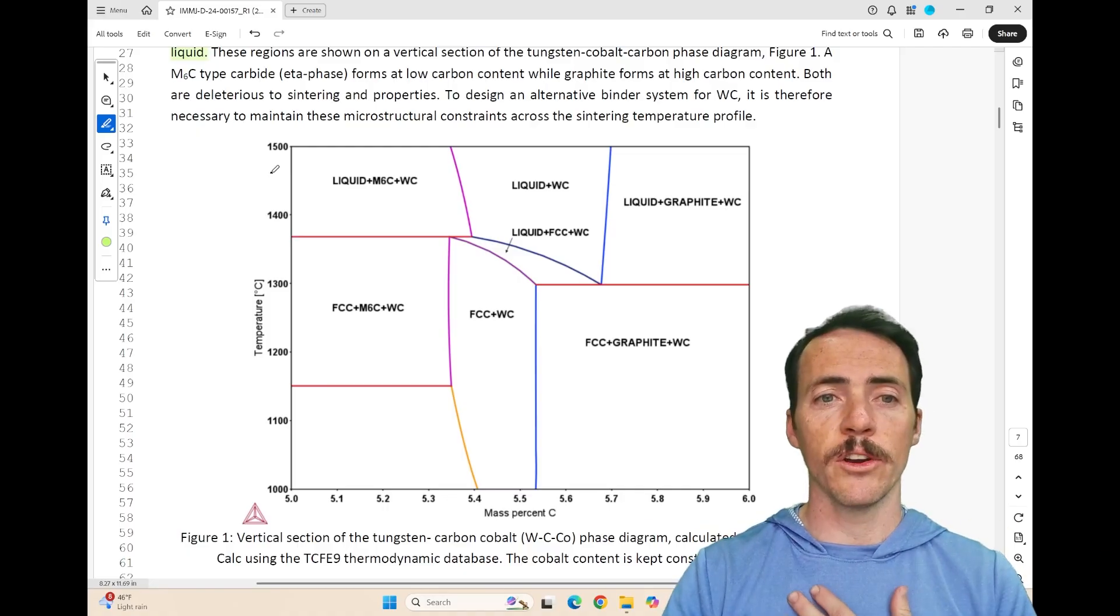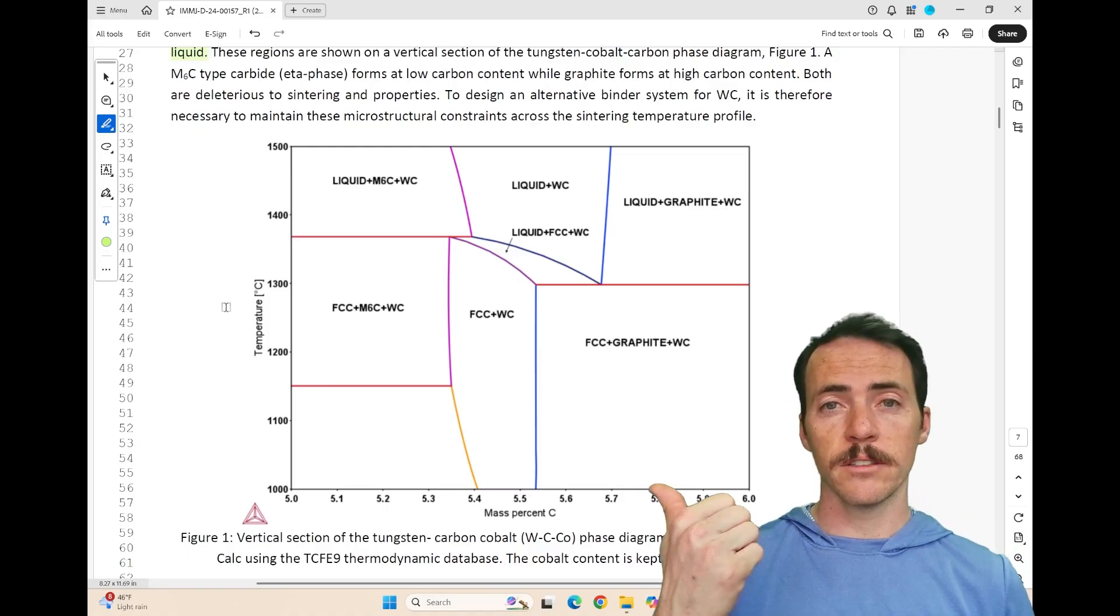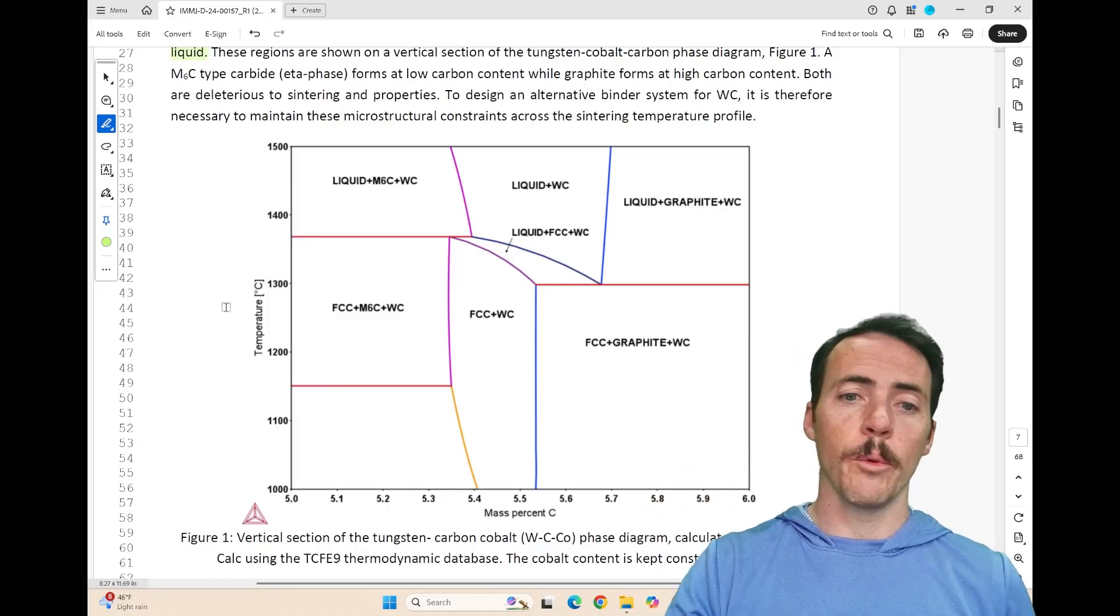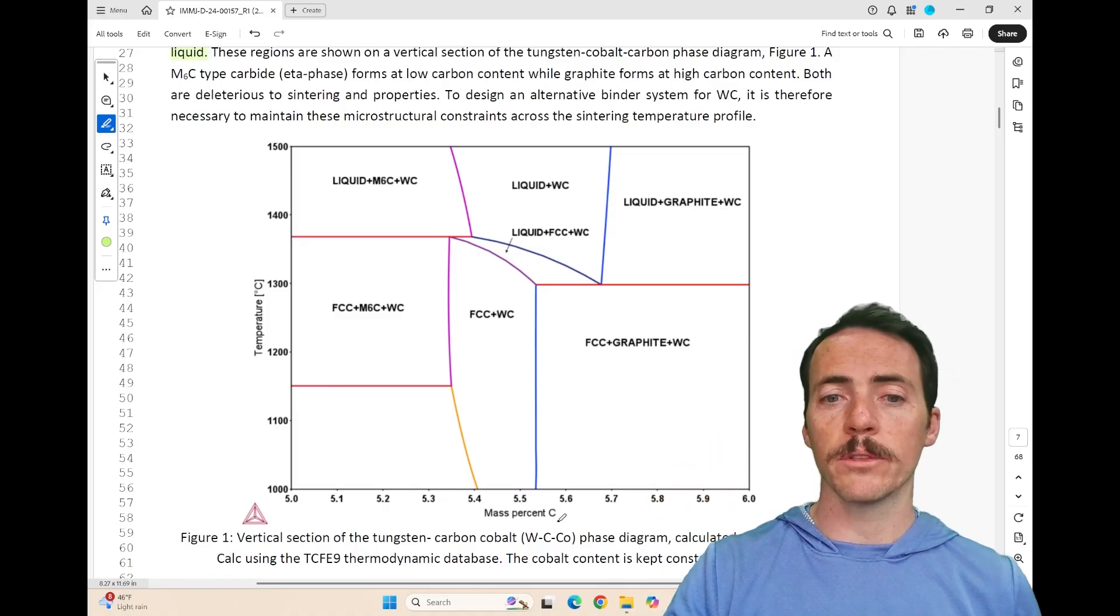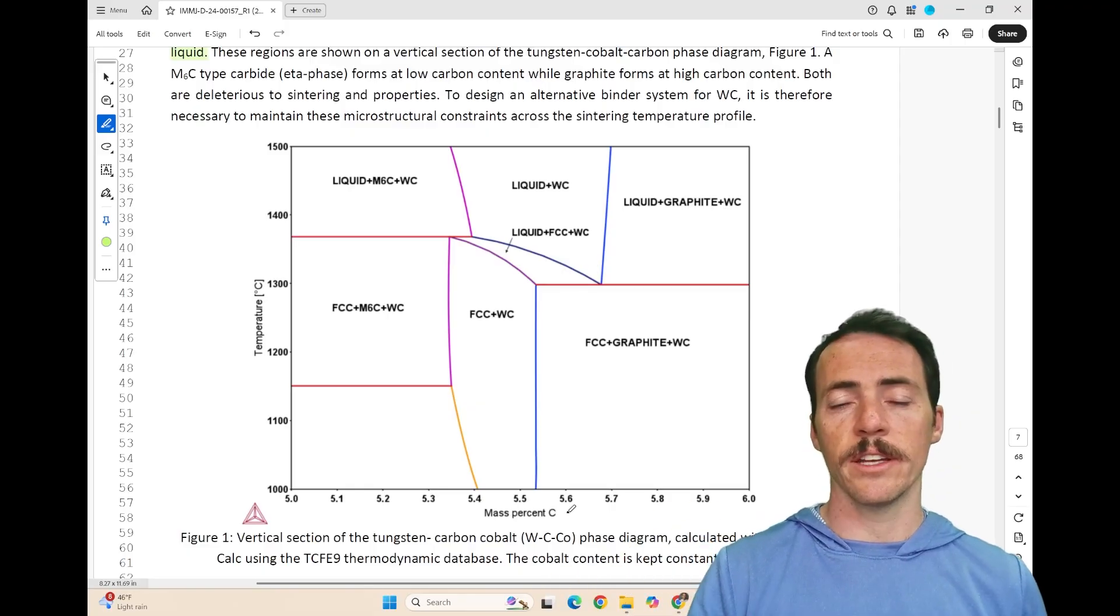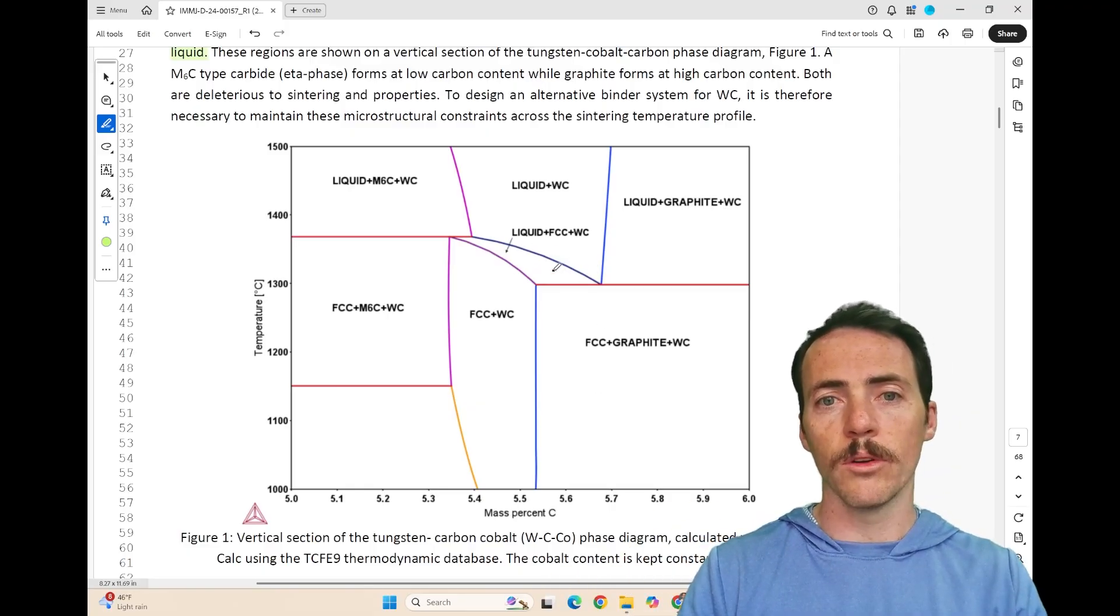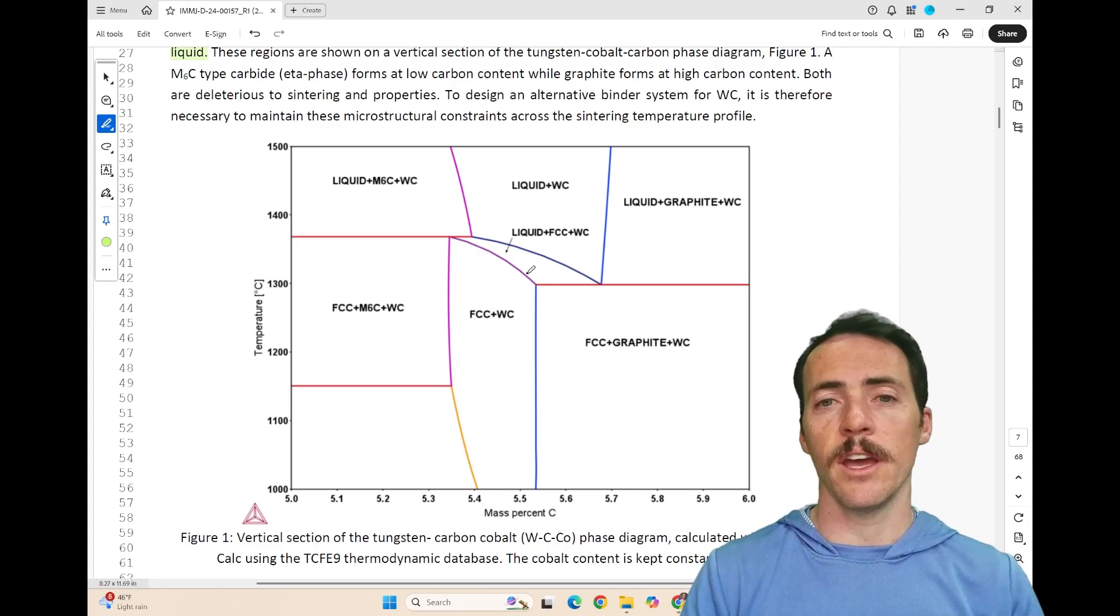So for example, what you're seeing here is a calculated phase diagram for a three component system, tungsten, cobalt, and carbon. And what you're seeing here on the x-axis is the amount of carbon present holding the cobalt concentration at 10 weight percent. And sure enough, you see that there does exist a region here in the middle where you've got liquid, FCC, and tungsten carbide.